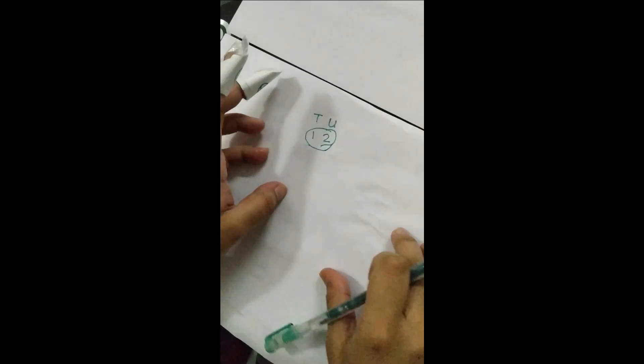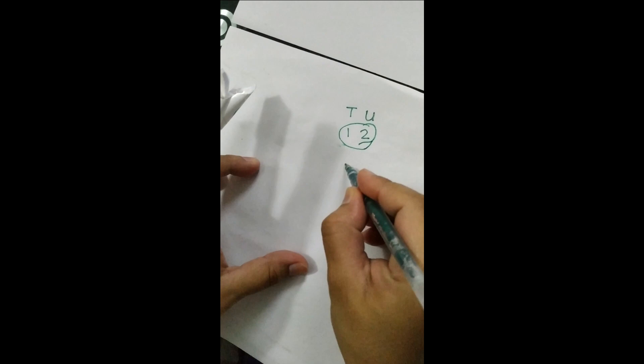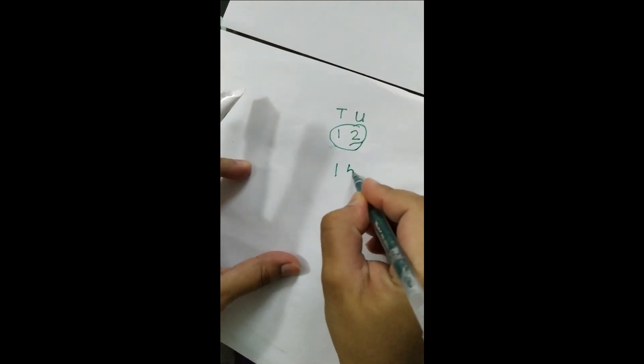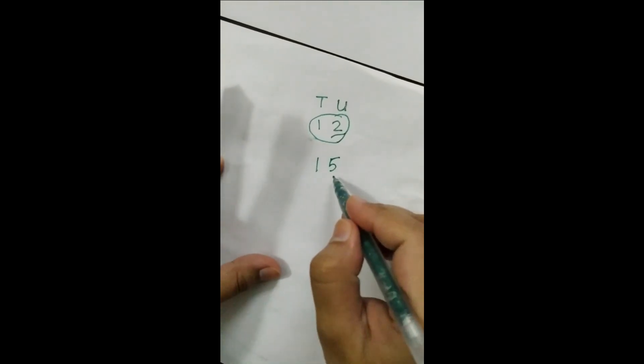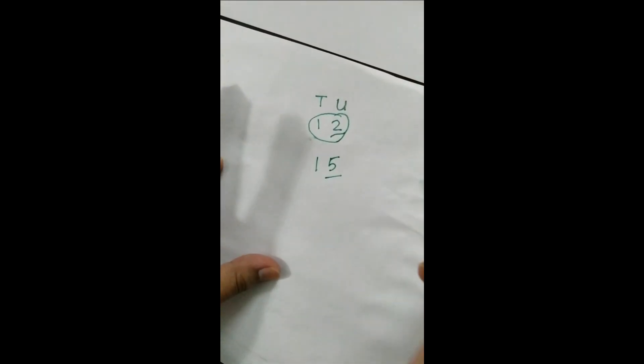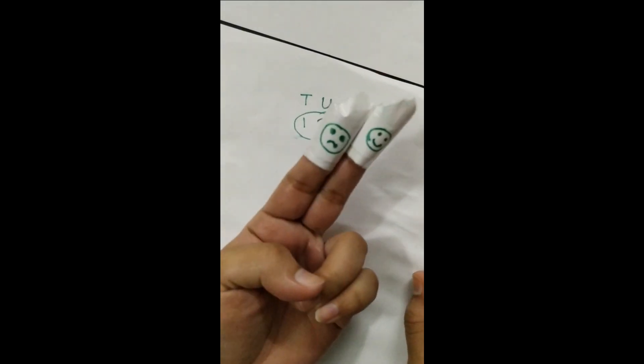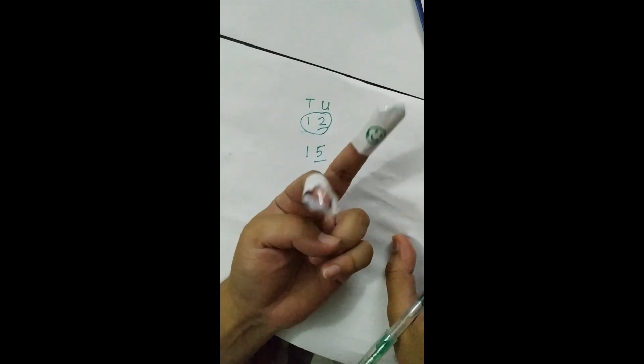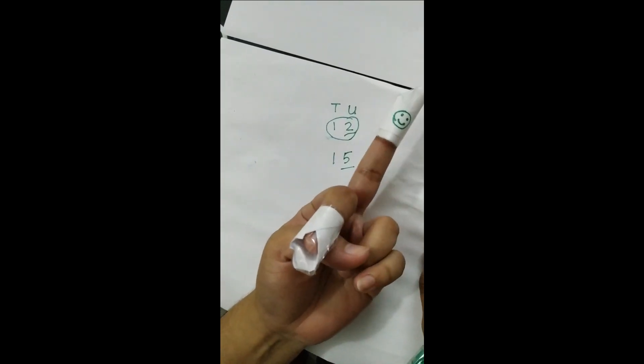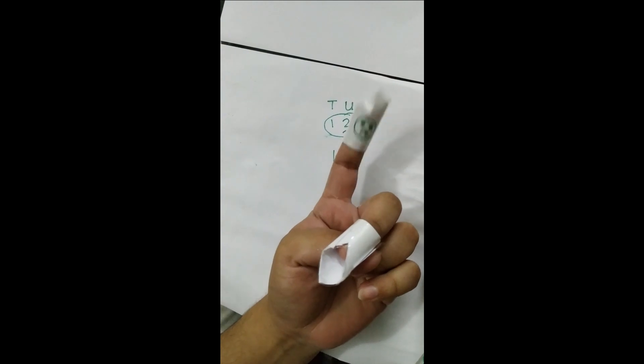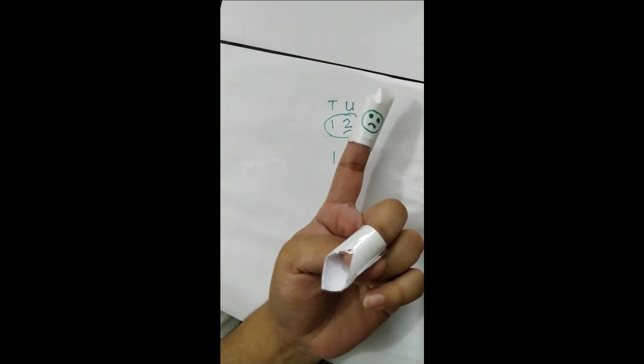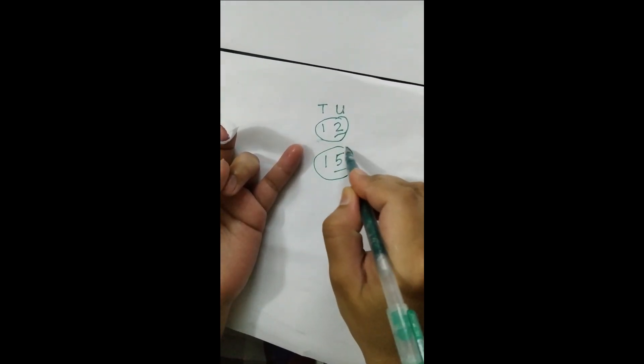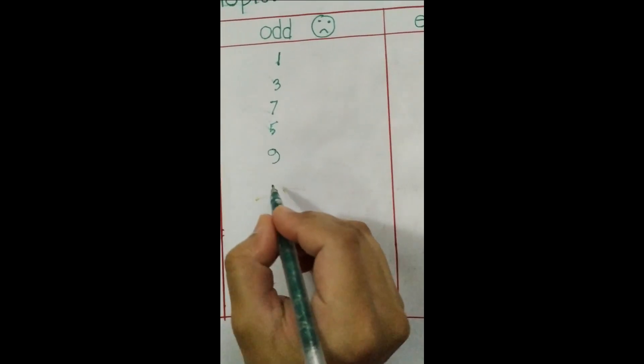If I want to write fifteen: one, five. Fifteen. Now as usual, we will observe the units first. One, two, three, four, five. Five is sad, that means five is odd. That means the whole thing will be odd, this fifteen is odd. Then we will write here fifteen.